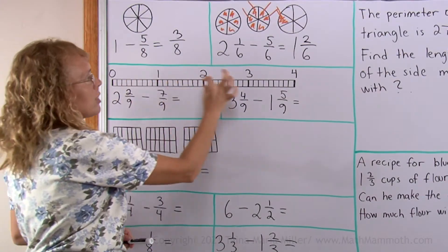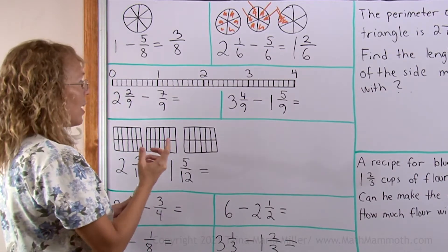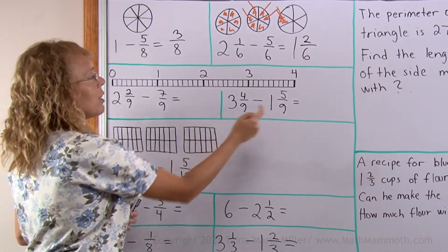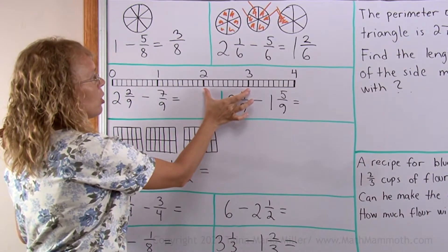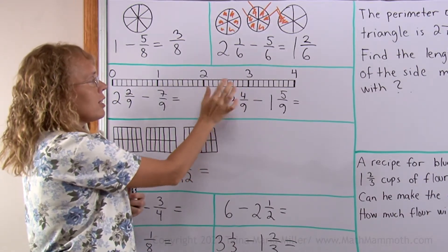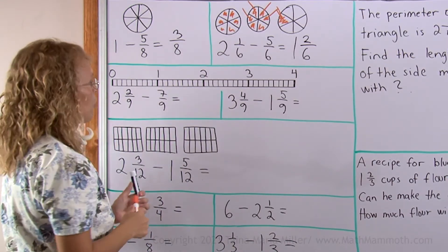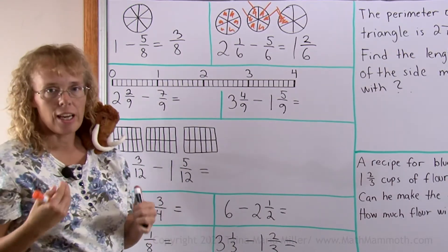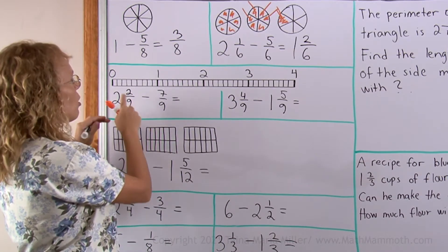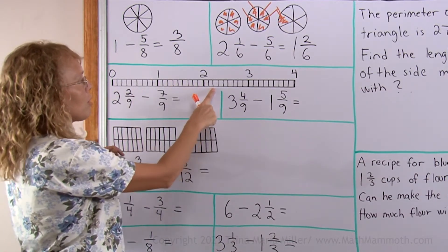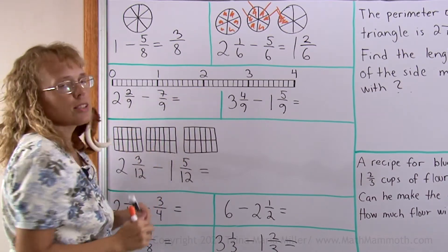This is a fraction strip and it is like a number line. In this case, as you can see, it is divided into ninths. Each whole number interval here — the distance between 2 and 3, for example — is divided into 9 parts. If I want to use it as a help in these subtractions I would have to color 2 and 2 ninths, or go up to that point and then go backwards 7 ninths. So that will work too.